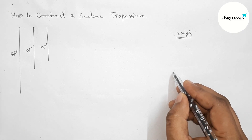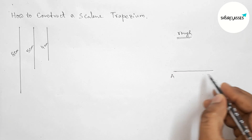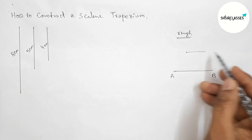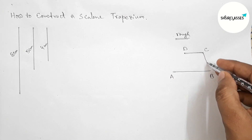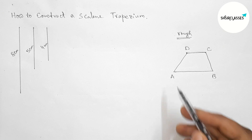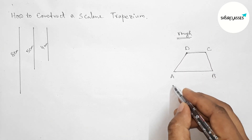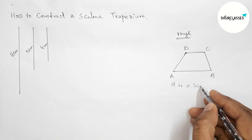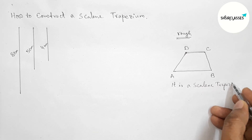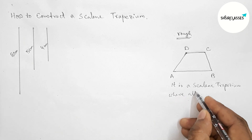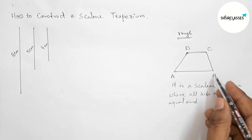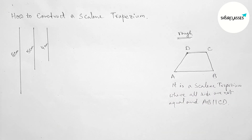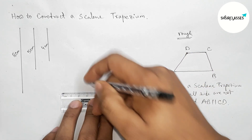Now roughly discussing some important notes. Drawing here roughly a trapezium ABCD. This is a scalene trapezium when all the sides are not equal, and also the sides AB and CD are parallel. Now I'm going to apply this concept.